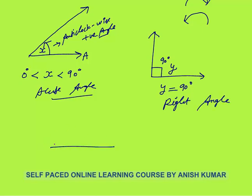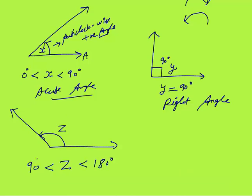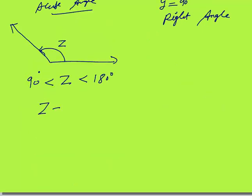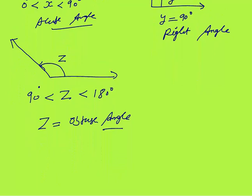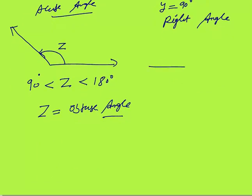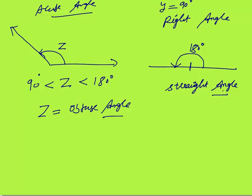Whenever the angle is more than 90 degrees, like this angle Z — Z is greater than 90 but less than 180 degrees — that is called an obtuse angle. So less than 90 but greater than 0 is acute; equal to 90 is right angle; greater than 90 but less than 180 is obtuse. Angle equal to 180 is called a straight angle.